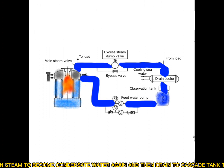The drain cooler is used to condense excess steam and return the steam to become condensate water again, which is then drained to the cascade tank to be suctioned by the feed pump, and the system repeats itself.